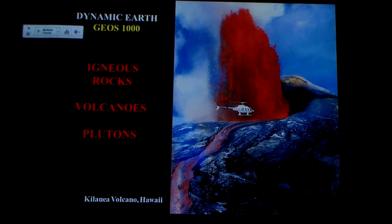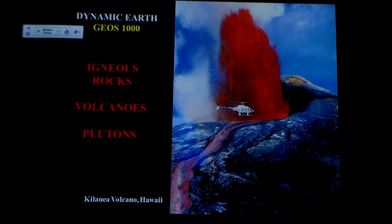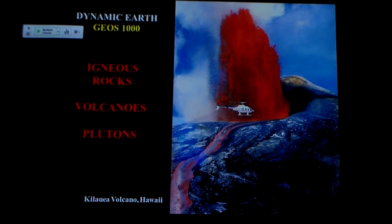I want to finish up igneous rocks. We talked about this idea that we can look at igneous rocks from two standpoints: those that get extruded — lava that comes out on the surface, making the aphanitic or fine-grained rocks like rhyolite and basalt — or rocks that don't make it to the surface, where magma gets trapped below, cools off slowly, becomes coarse-grained material. Those are the intrusive or plutonic igneous rocks: the granites, the diorites, and the gabbros.